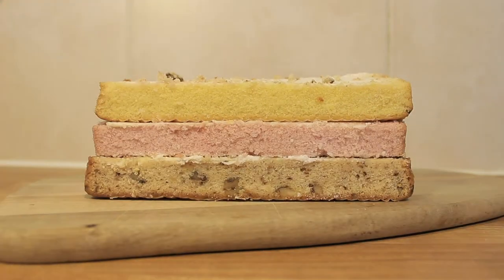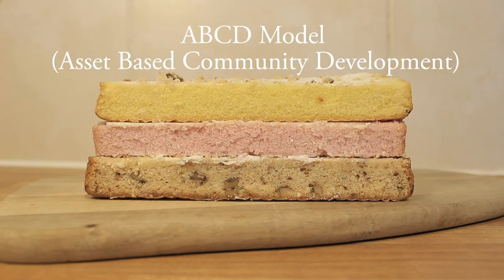The third layer of the cake moves from the person towards the community, taking a strengths-based approach up into the community. This links to the ABCD model — the asset-based community development approach — which starts by looking at a community in terms of what are the assets, strengths, resources, talents, and opportunities within it. How can those strengths and resources be connected together? And where there are gaps, how can we use the assets that are there to develop and address those issues?